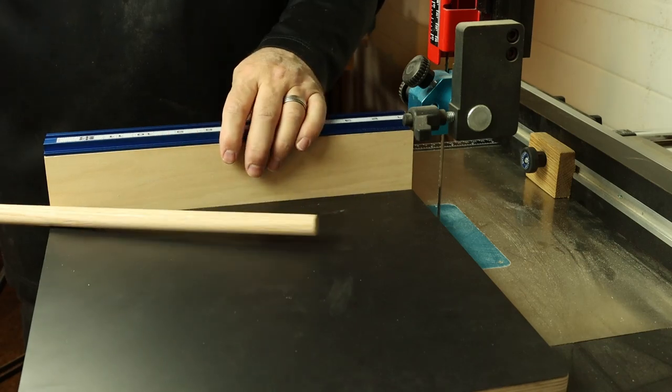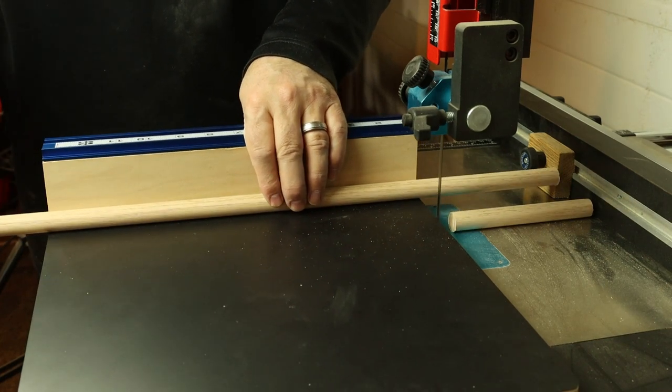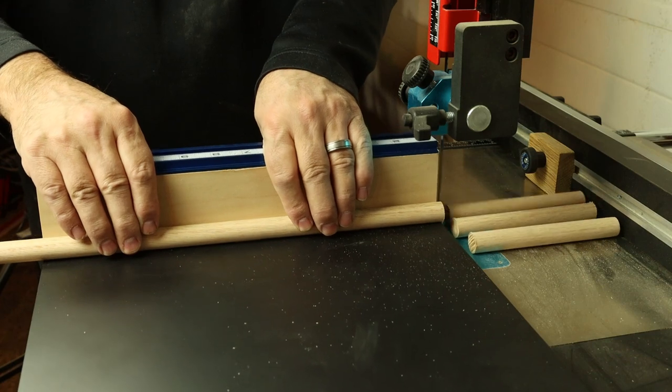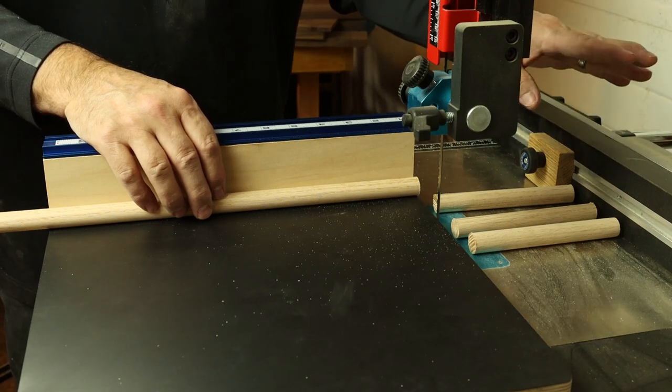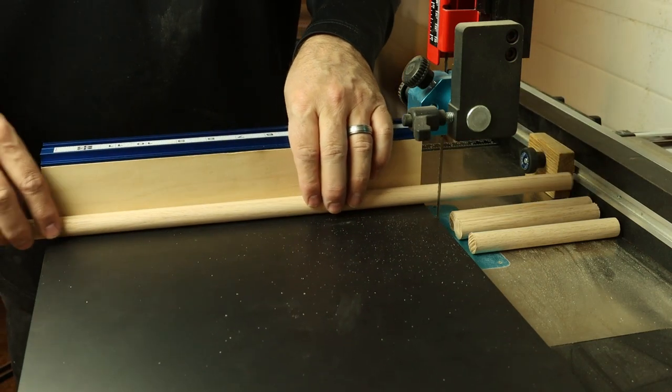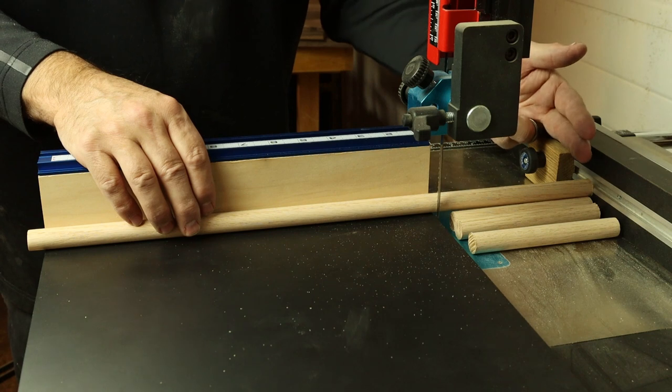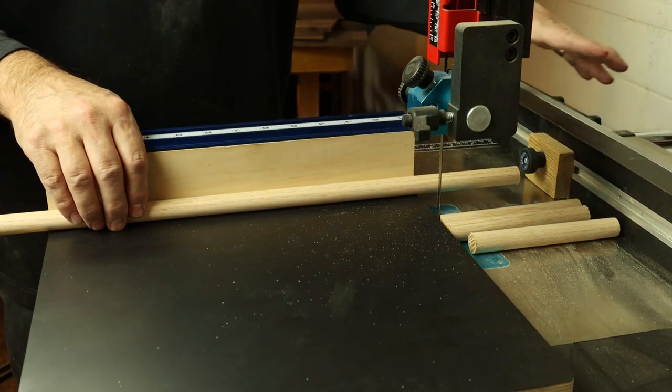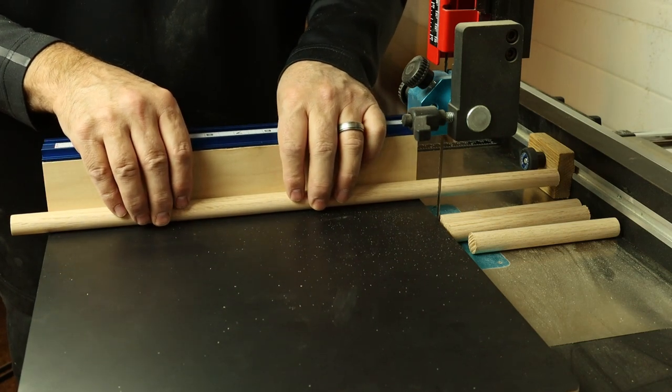Now with this method that uses a stop block on the fence it's really important. You might be tempted just to use the fence itself to register the work piece as you advance that over. The problem with that would be then you would have the small off cut trapped between the moving blade and the fence and so you never want to do that. Instead you want to have that stop block. If you don't have a t-track in your fence just simply clamp a stop block to your fence and you'll be able to do this same type of action. Use the stop block to register the piece and then move it forward. Works pretty well that way.